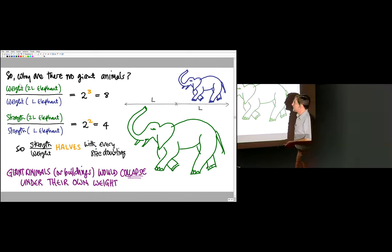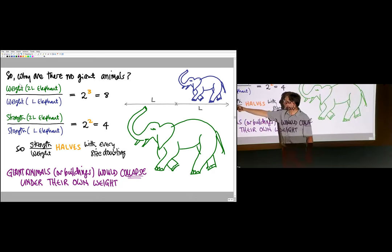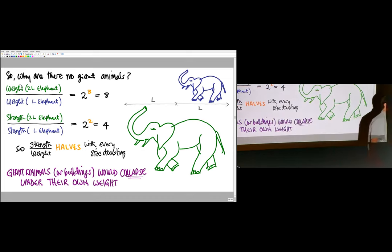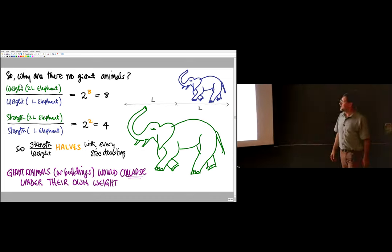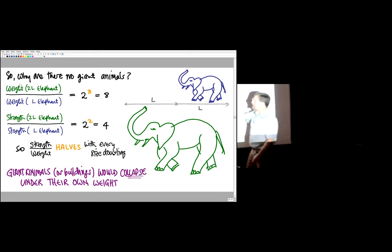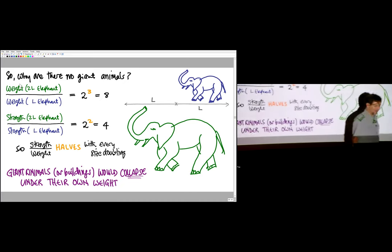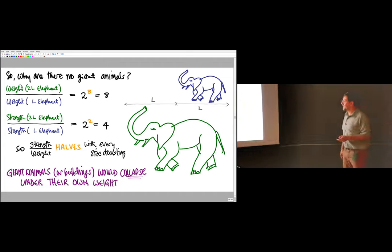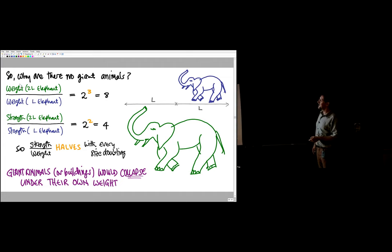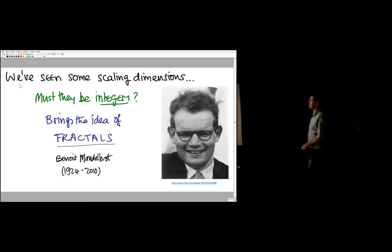You can see every time you double the size of the elephant, its strength-to-weight ratio halves. One part went up by eight, one part went up by four. There's a mismatch. So if we keep going, what we'll do is exponentially worsen this ratio, and eventually the elephant would collapse under its own weight. So a beautiful argument why we don't have supergiant animals. I think I'll skip the explanation of why eight and four.